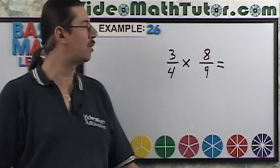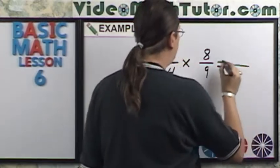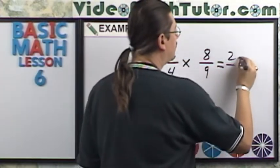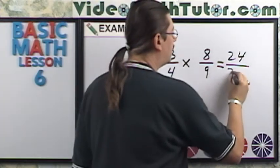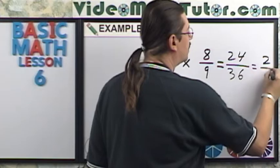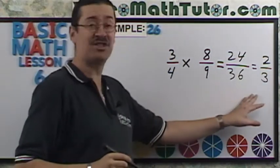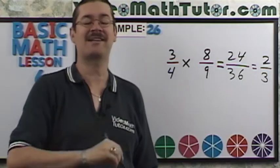For this example, I want to multiply these two fractions together. So what we really need to do is just multiply the numerators together and you get 24. Multiply our denominators together, you get 36. Well, I can reduce that and it becomes two thirds. Now there's actually a slicker way of doing this. Let's try that next.